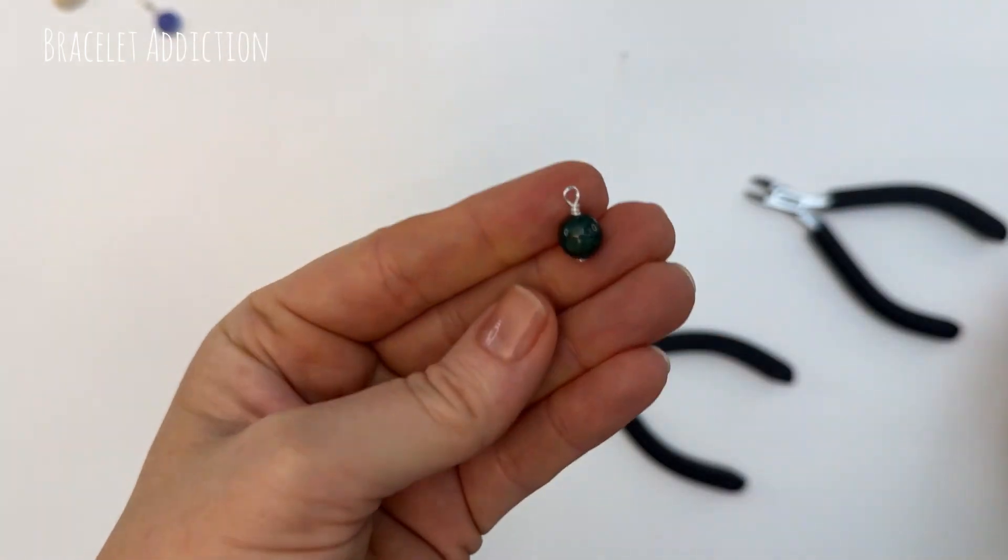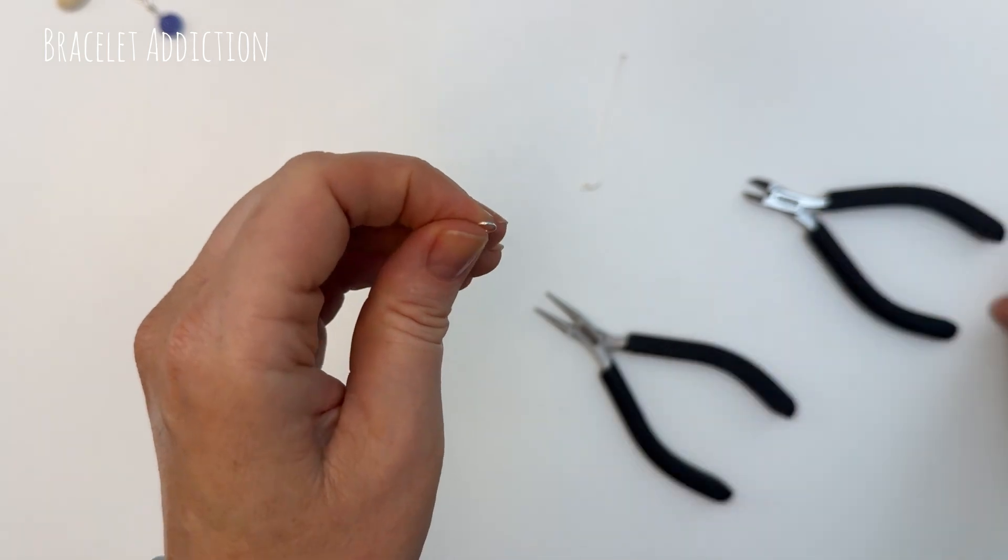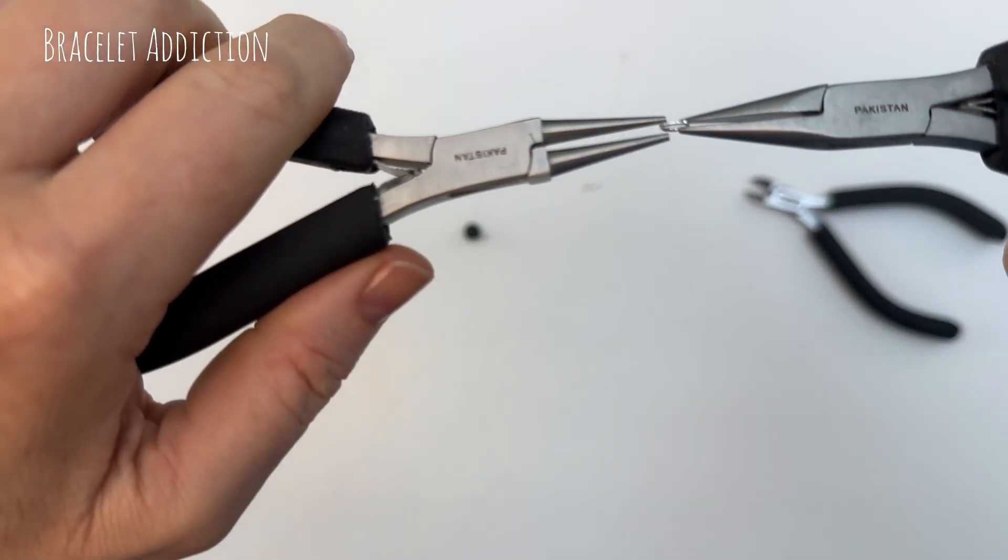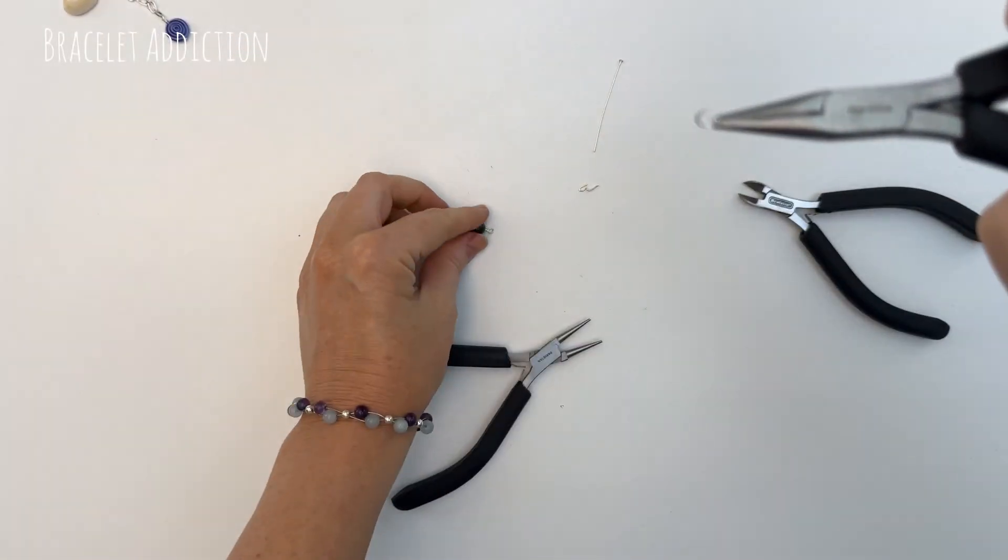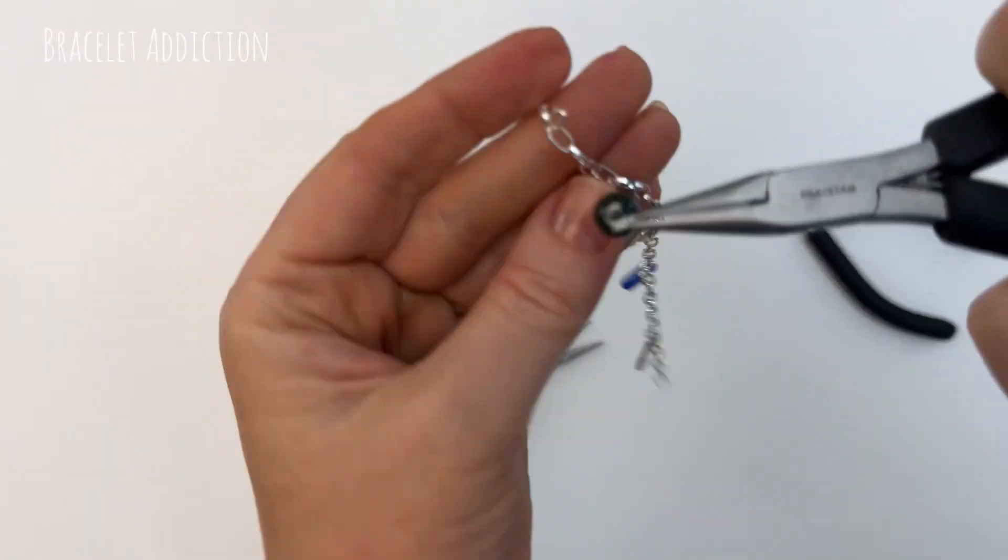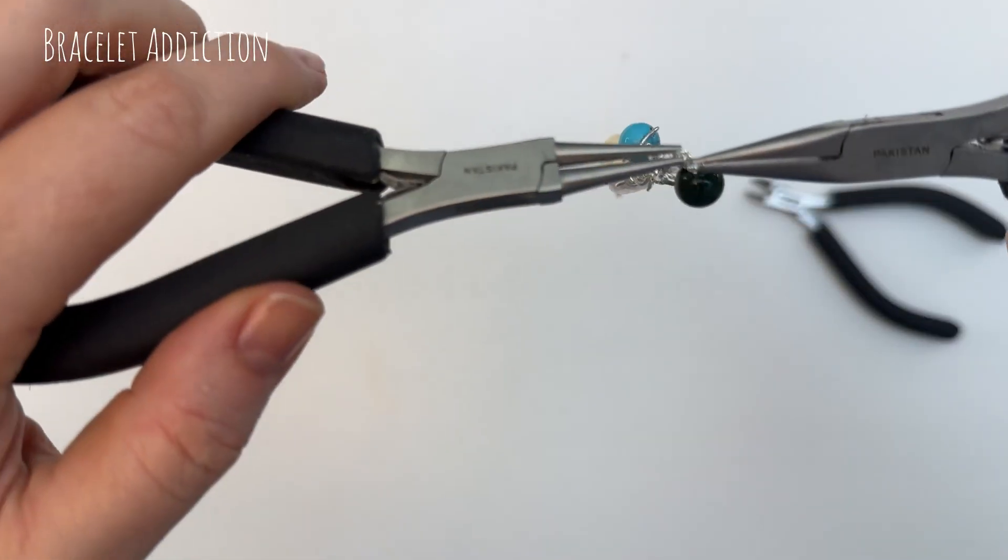Now to attach your charm you can either thread a cord straight through the loop or add it onto something with a jump ring. So opening a jump ring and placing your charm on and then whatever bracelet or necklace you're making.